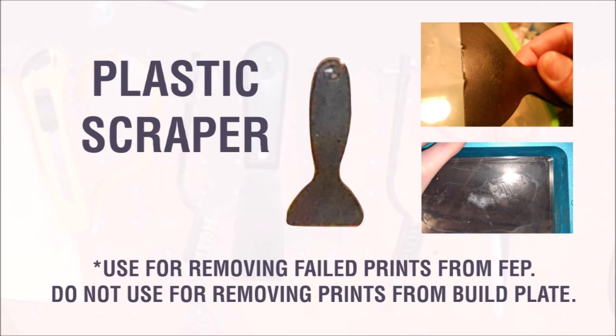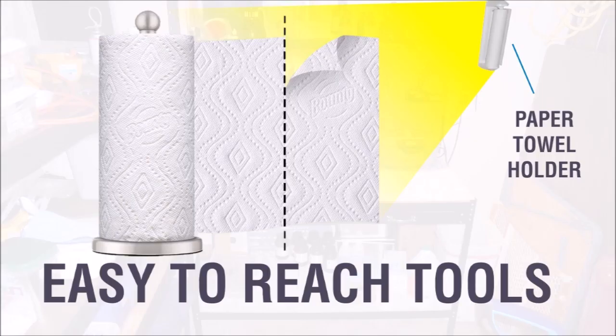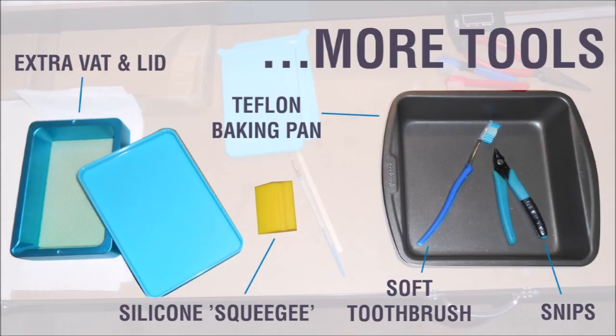It goes without saying, using a metal scraper on your FEP sheet is pretty much a recipe for disaster. A quick note on the paper towels, if you can get paper towels that have the half sheet perforations, you're going to use a lot less paper towels during this process.